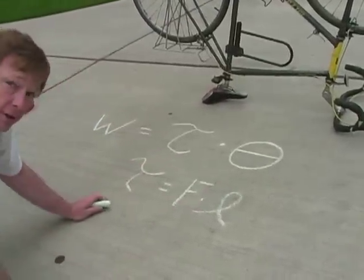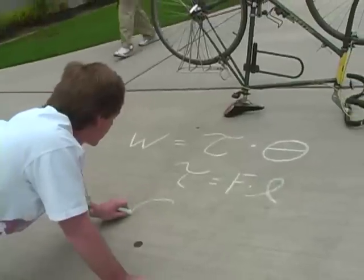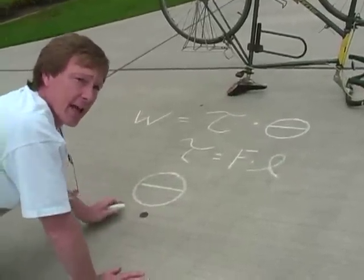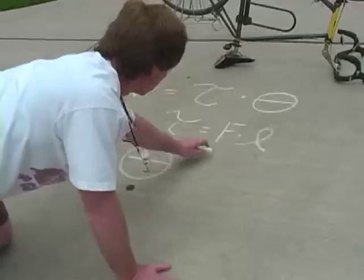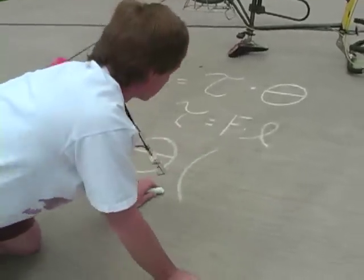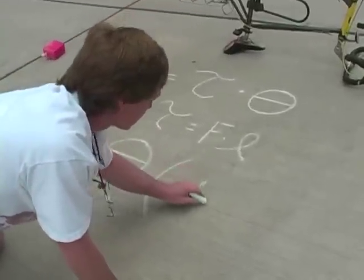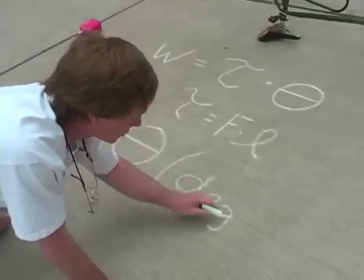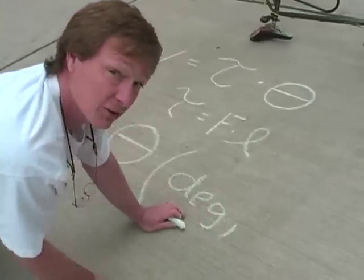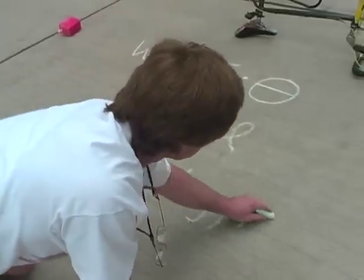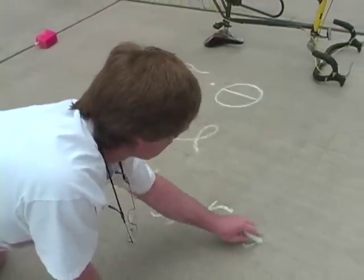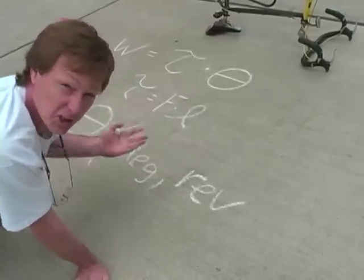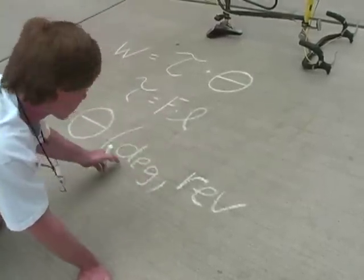Remember that torque is force times moment arm r. Now, the units of the angle are different. Theta is your angle, and theta can have units of degrees — 360 degrees in a circle. It can have units of revolutions — I can move through one revolution, or 1/360th of a revolution, which would be a degree.